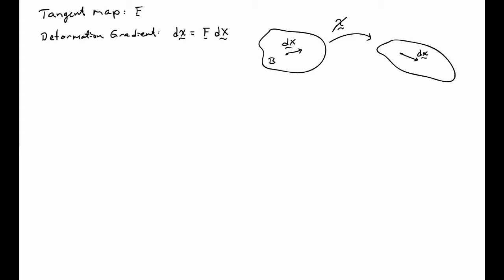That's via using the deformation map chi and doing a Taylor series approximation to the motion of the two endpoints of the original vector, d capital X.